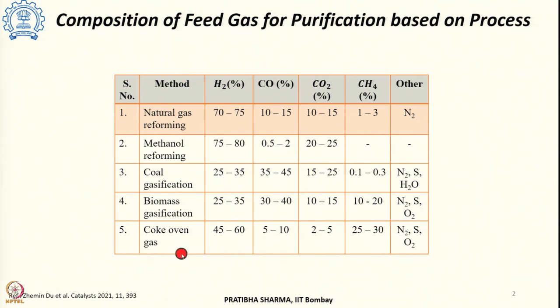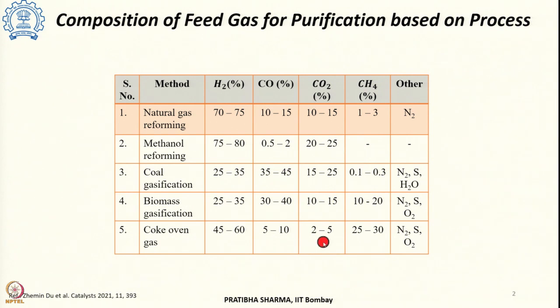In the coke oven gas, 45 to 60% is hydrogen, 5 to 10% of carbon monoxide, 2 to 5% of carbon dioxide, methane 25 to 30%, and then remaining nitrogen.